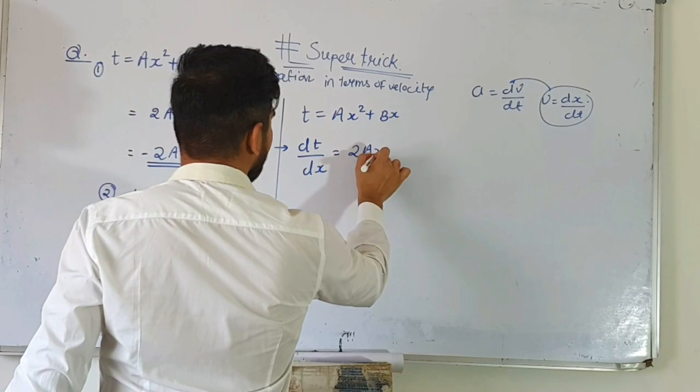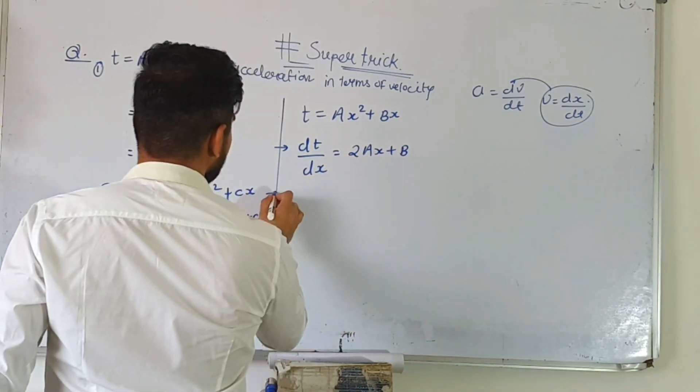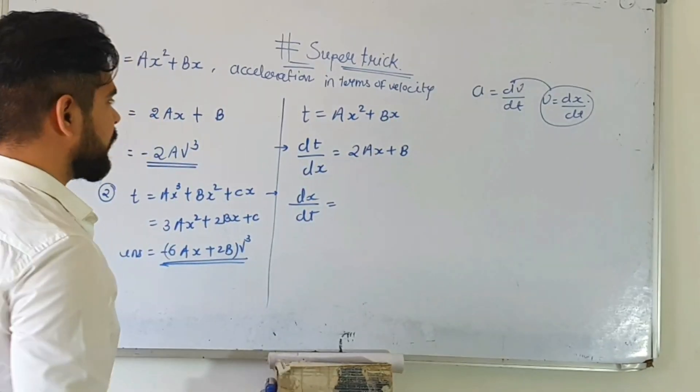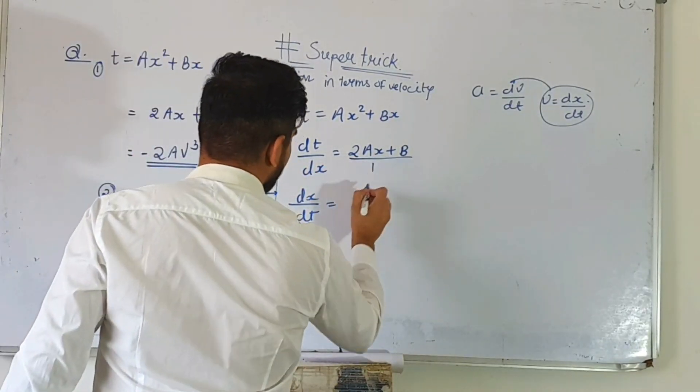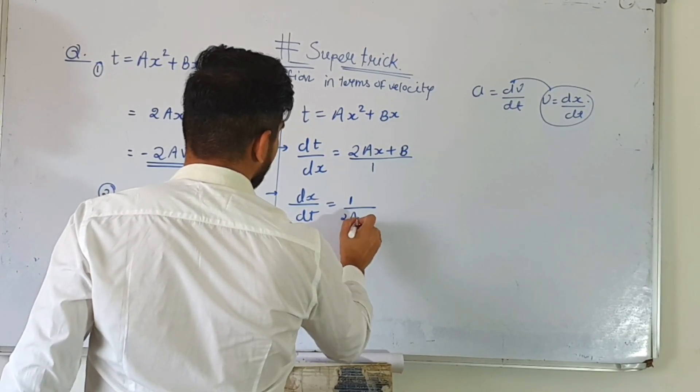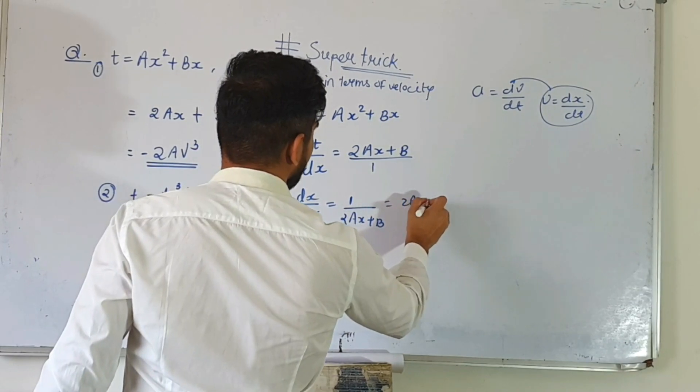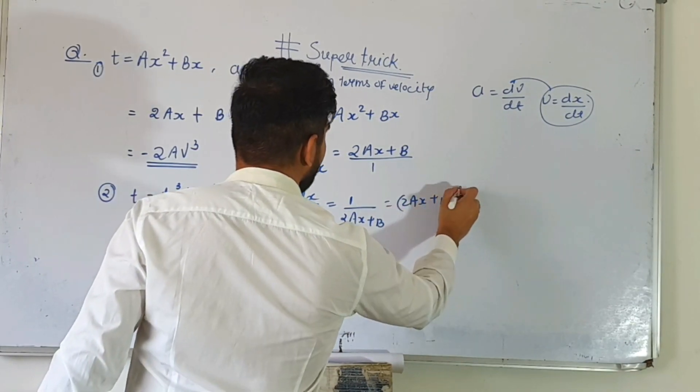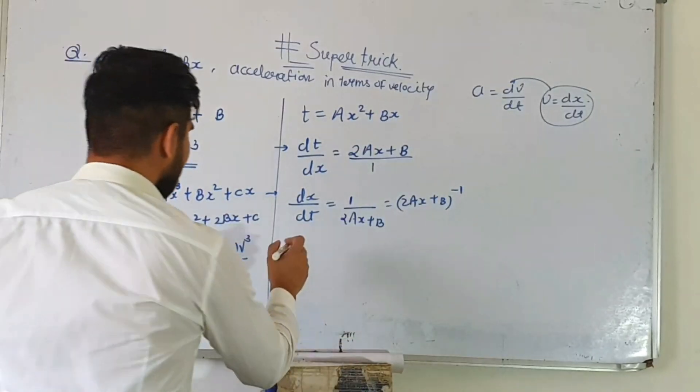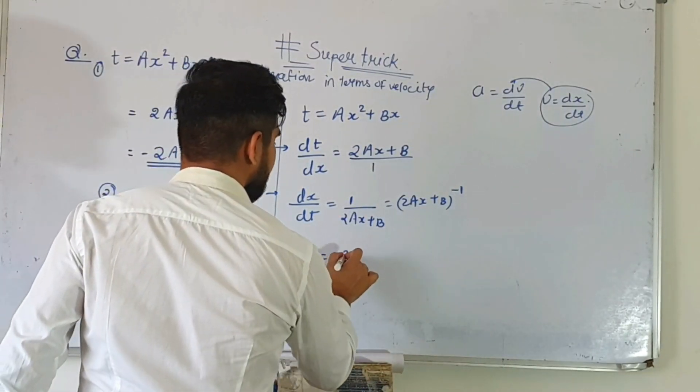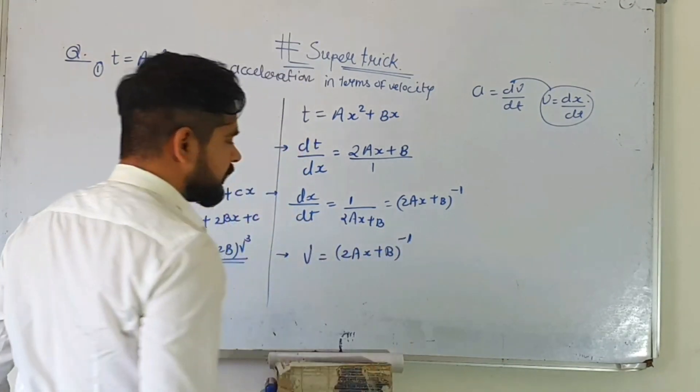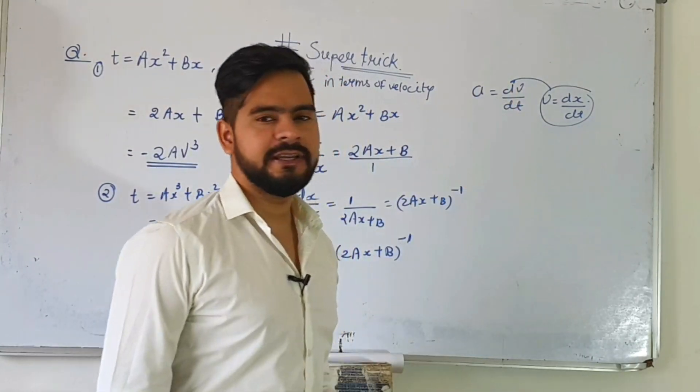So this answer becomes 2ax plus b. I can take the reciprocal, there's nothing wrong with that. So it becomes 1 upon 2ax plus b, which means 2ax plus b to the power minus one. And dx by dt is what? That is velocity. So velocity becomes 2ax plus b to the power minus one.